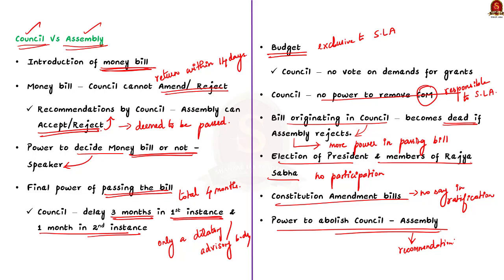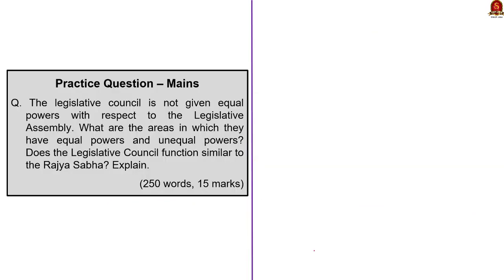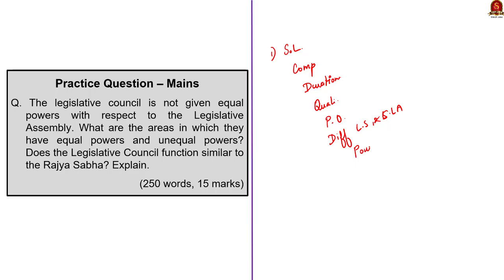From the above, it is clear that the position of the Council with respect to the Assembly is much weaker than the position of Rajya Sabha with respect to Lok Sabha. In this discussion, we saw about State Legislature — its composition, duration, qualification of members, presiding officer, differences between Lok Sabha and Legislative Assembly, and the powers that Legislative Assembly has over the State Legislative Council.